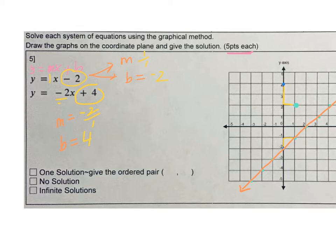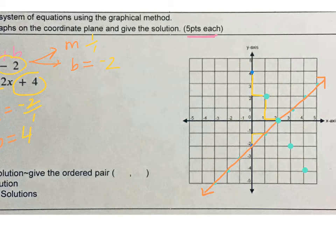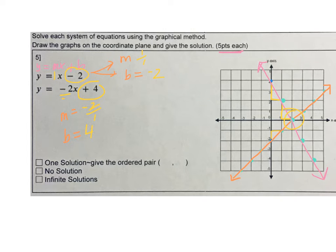I'm going to keep going down 2, over 1 to add more points, then connect those points and make my line. Do you see the solution? Right there is our solution — the point of intersection. Because they crisscross and make an X, we know this is a one-solution equation. We get one ordered pair they have in common. To write the ordered pair, we give X first — it goes forward 2 — and then Y doesn't go up or down at all. So our ordered pair is 2, 0.